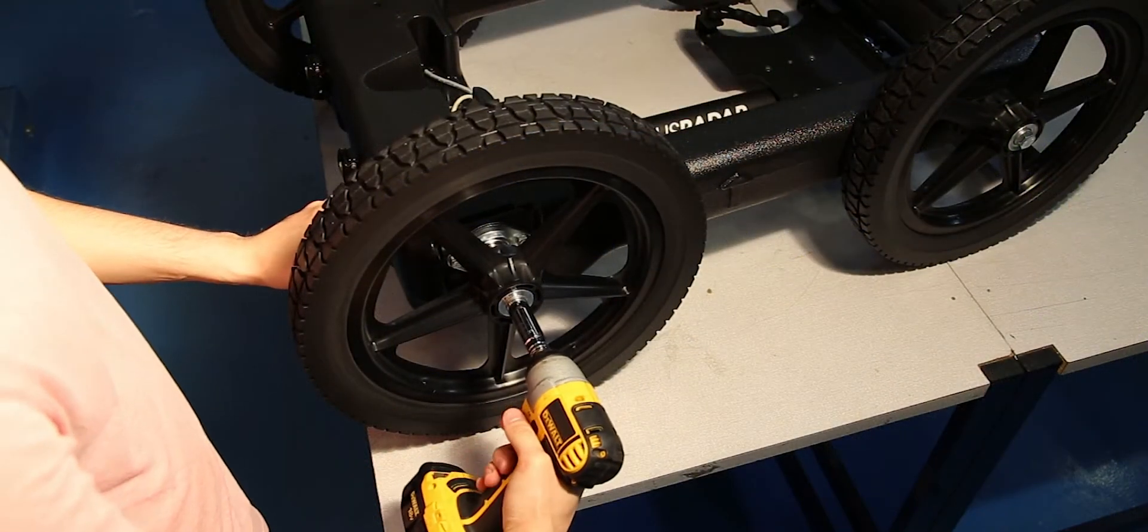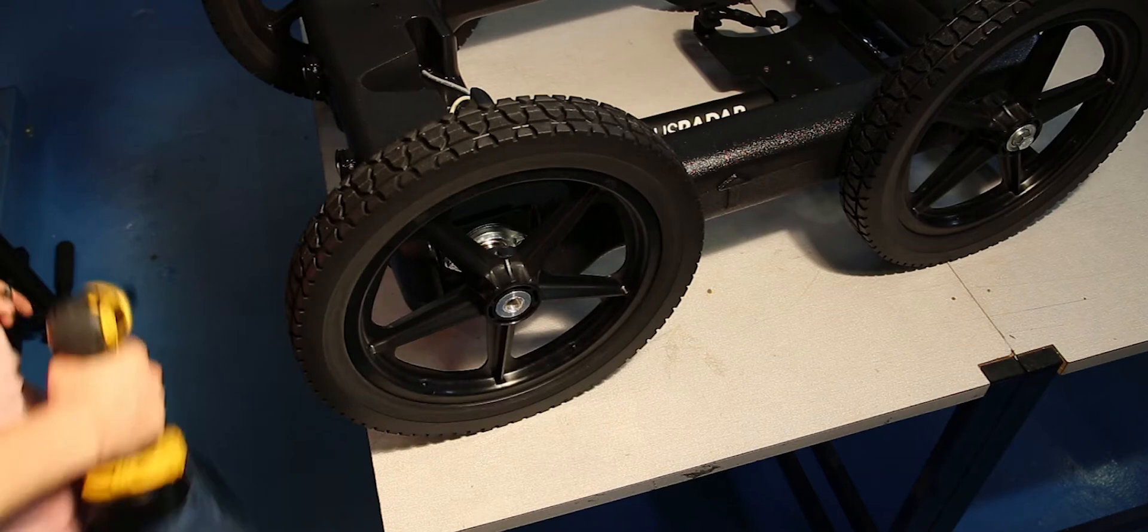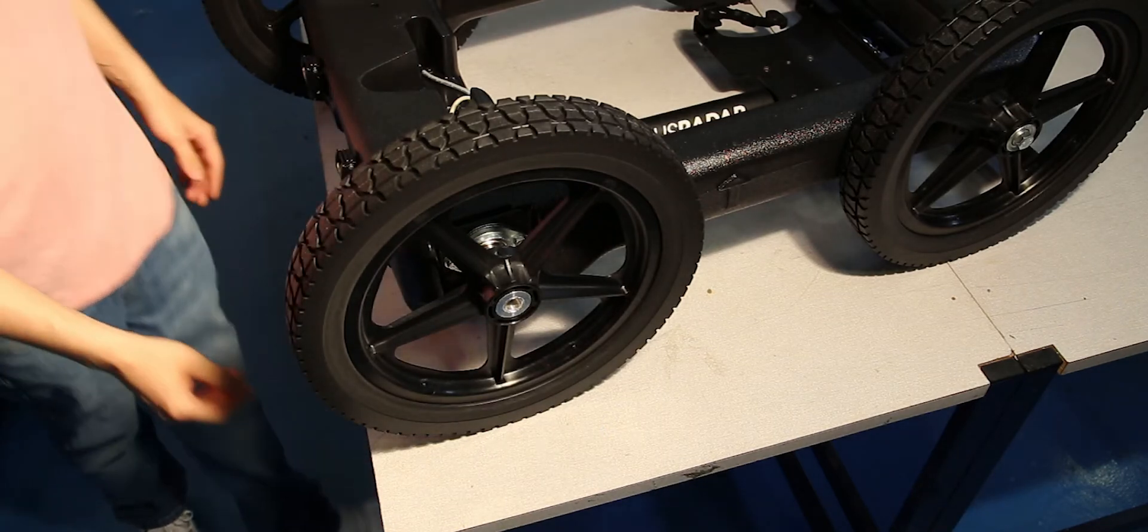First, remove the wheel using an impact driver with a 15mm socket attachment. A wrench can also be used, but you may find it difficult to crack the thread locking adhesive.